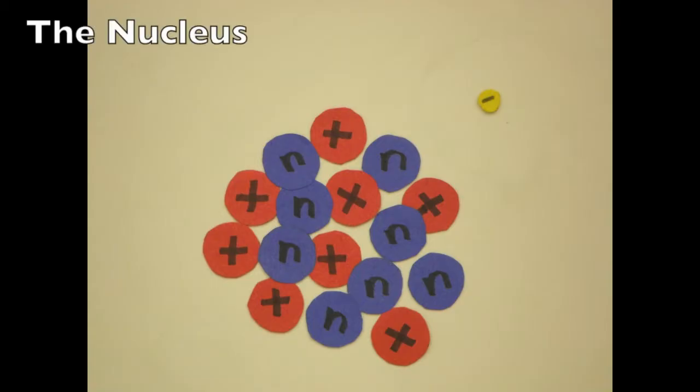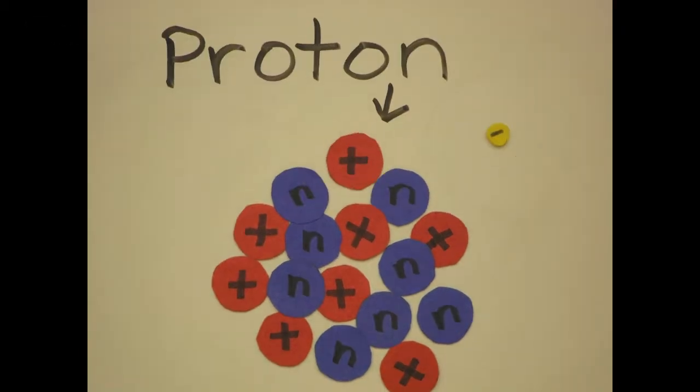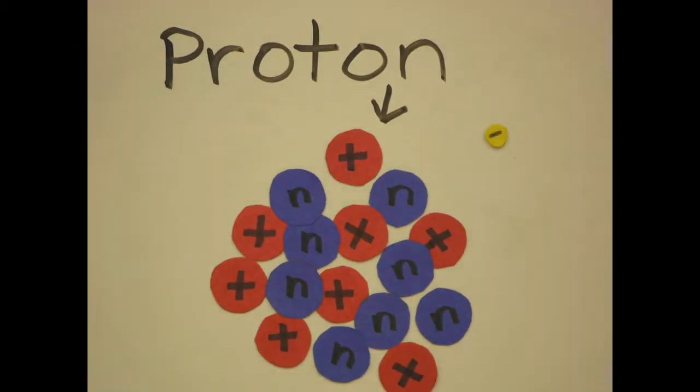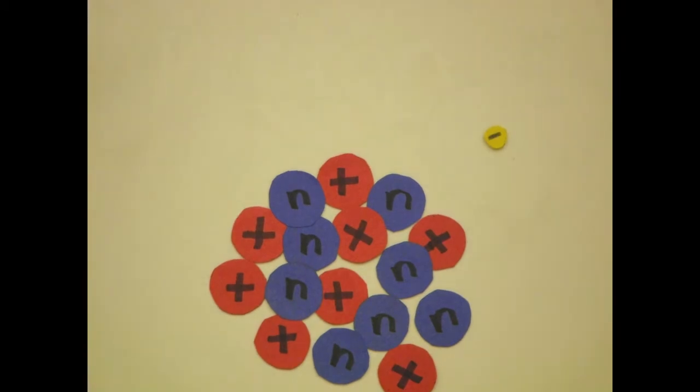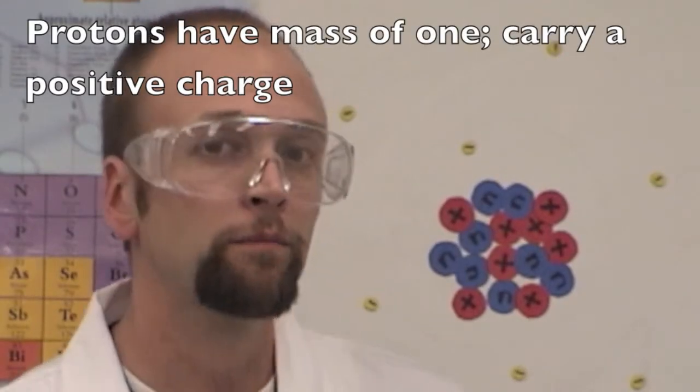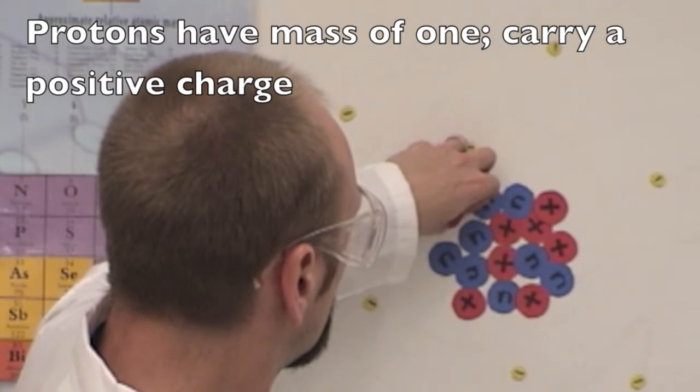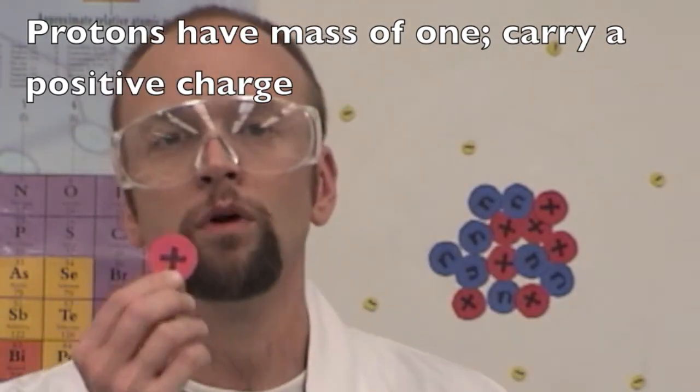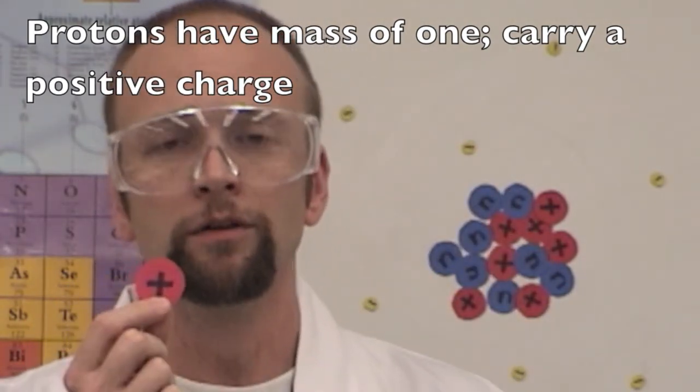This negative charge of the electrons is balanced with the positively charged protons found in the nucleus. Protons have an atomic mass of one and carry a positive charge, so they repel each other.